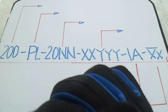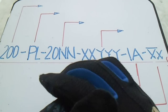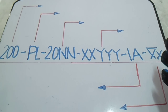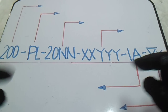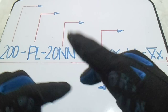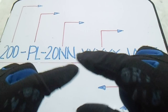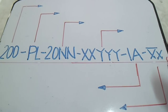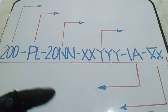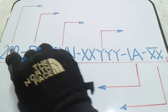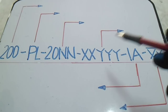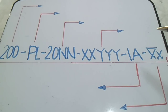Hi guys, welcome to Piping Welding and NDT channel. This is the line number — if you already see the isometric below, this is it. From this line number, they have different meanings. I have arrows here: one, two, three, four, five, six, and on these arrows I will show you the meaning of this line number in arrangement. This is the arrangement of the drawing.